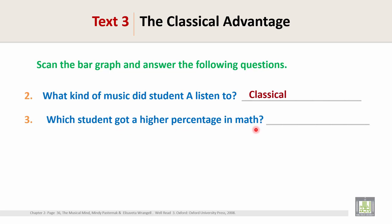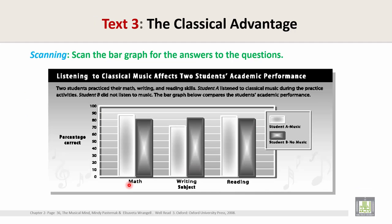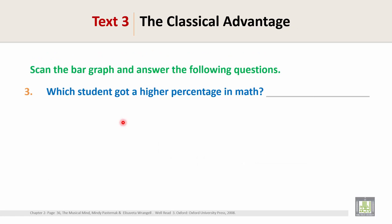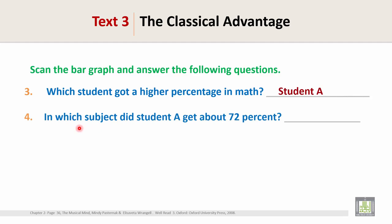Question 3: Which student got a higher percentage in math? To answer this, look at the graph and find the subject math. The white color represents Student A and the black color represents Student B. Student A got a higher percentage in math. So the answer is Student A.